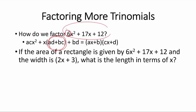Let us look at it in a simpler scenario. If the area of a rectangle is given by 6x squared plus 17x plus 12 and the width is 2x plus 3, now here we are already given the width.